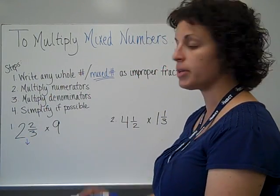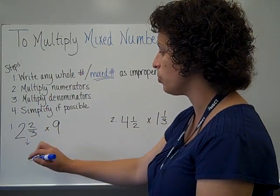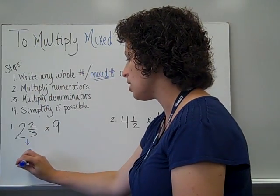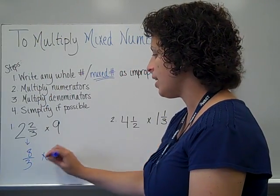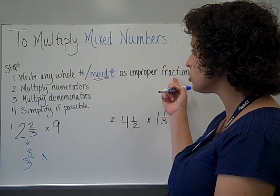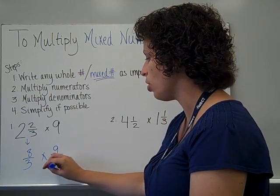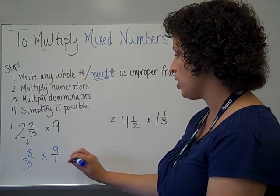We need to turn this mixed number into an improper fraction. 2 times 3 is 6, plus 2 more is 8, denominator stays the same, times, now I have a whole number this time. Whole numbers also turn to improper fractions, and we do this by always placing the whole number over a denominator of 1.